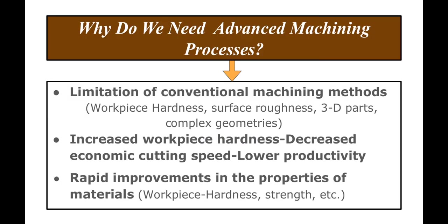There are various reasons why we use advanced machining processes. The basic answer is that there are various limitations with conventional machining methods. Work piece hardness should be lower than tool hardness. Also, present-day industry needs a very high level of surface finish — surface roughness value should be very low, with demand for nano-level surface roughness where Ra should be in the range of 1 nanometer.